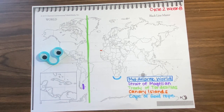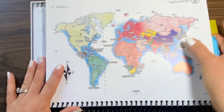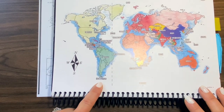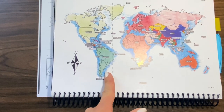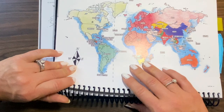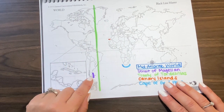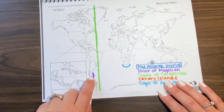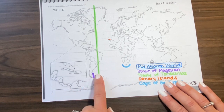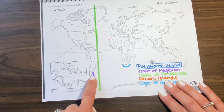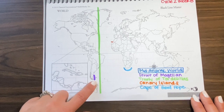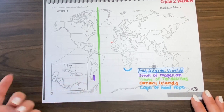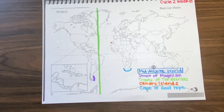First we have the Cape of Good Hope down at Africa's foot — that's how I'll have them remember it. Then the Strait of Magellan: this is from the Foundations guide, marked here below. If you look closely, the Strait of Magellan actually passes through a tiny space at the tip of South America so you don't have to sail all the way around.